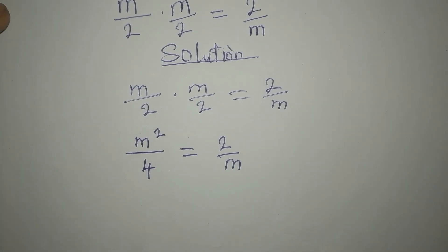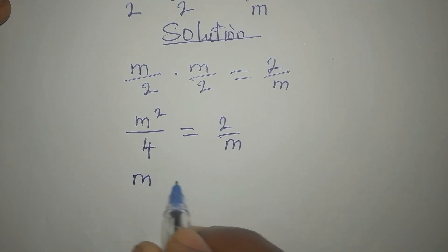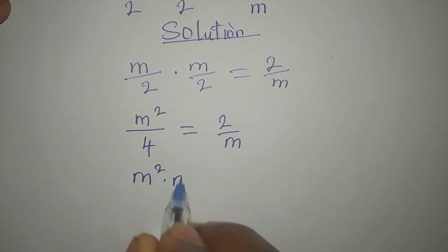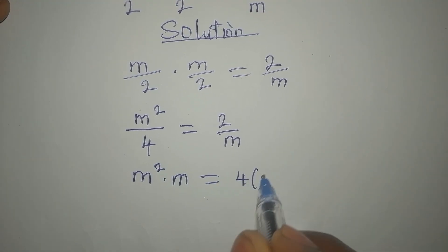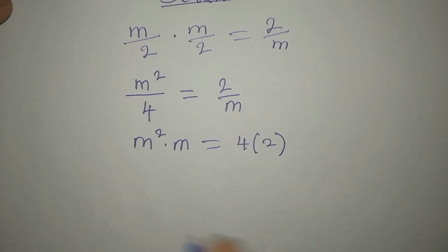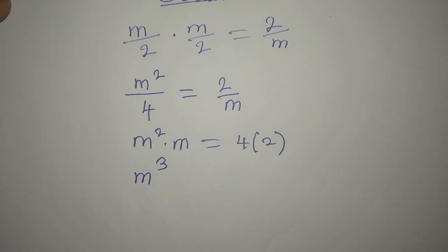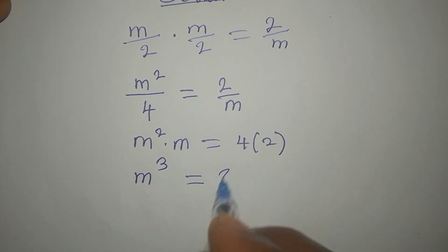Then at this point, we can cross multiply. So we have m to the power of 2 times m equals 4 times 2. So this means that our m to the power of 3 is equal to 8.